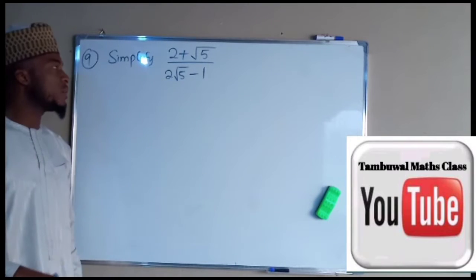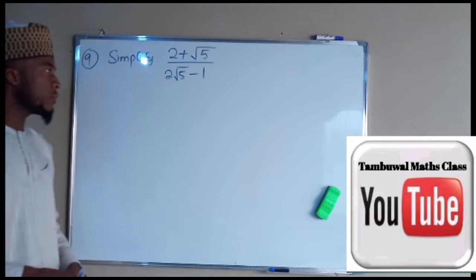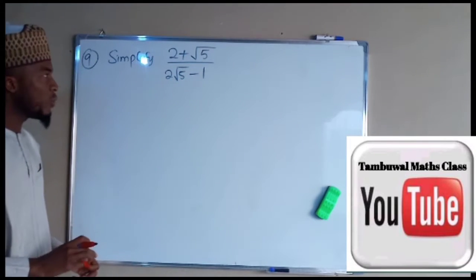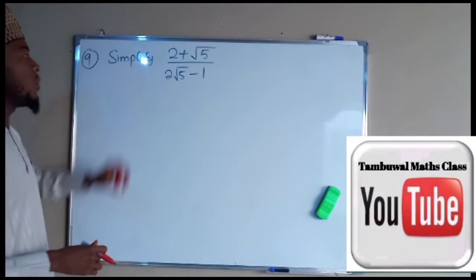Let's simplify 2 plus root 5 divided by 2 root 5 minus 1. This is a surd number here which is an irrational number, so we have to rationalize the denominator by multiplying